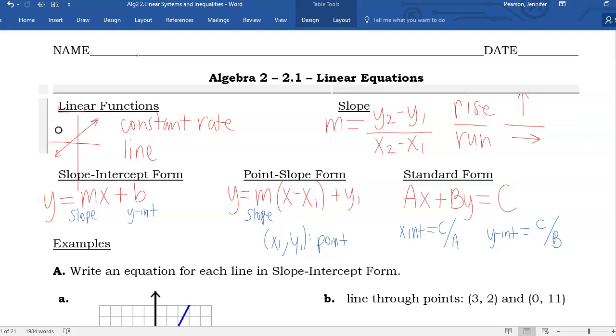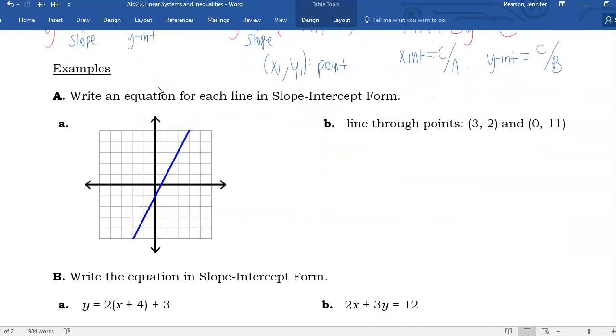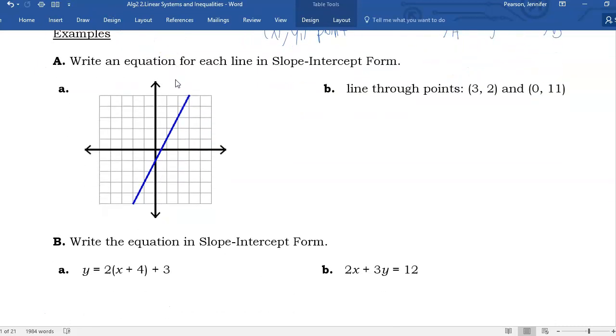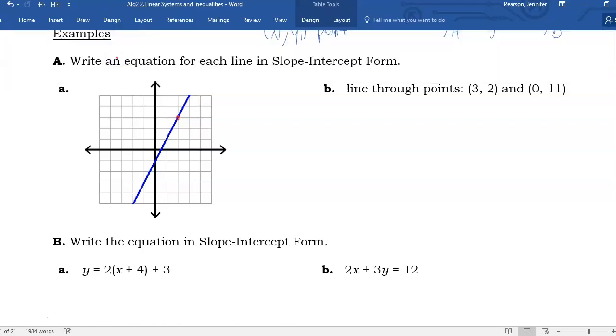Let's try some examples. The first one says write an equation for each line in slope-intercept form. The first one is giving me a graph, a picture. So I'm going to write an equation like this, which means I need the slope and the intercept. The slope—I could use the formula, I could find some ordered pairs, subtract those values, divide those values. But in this case, because I have a picture, it's actually much easier to count rise over run.